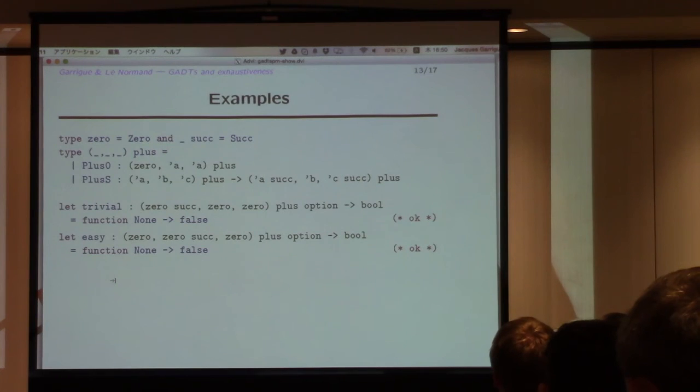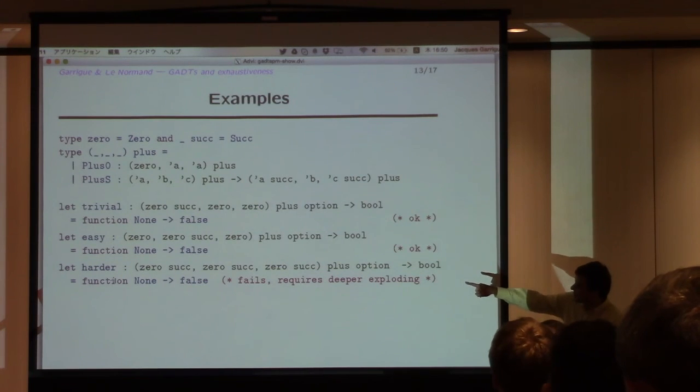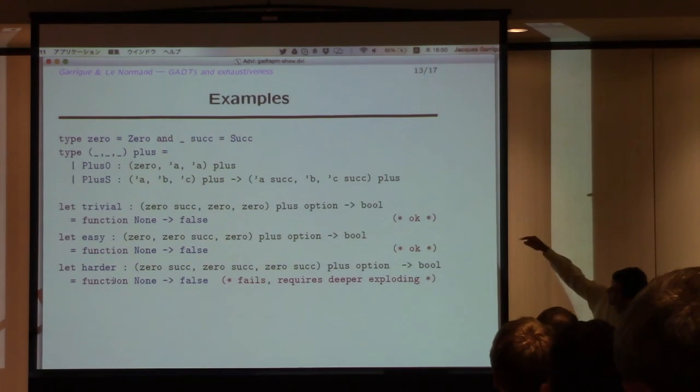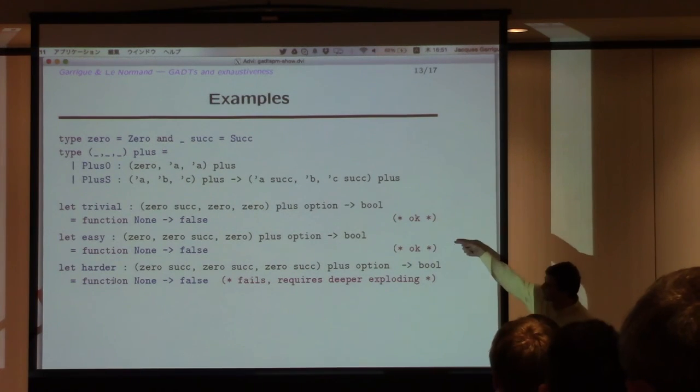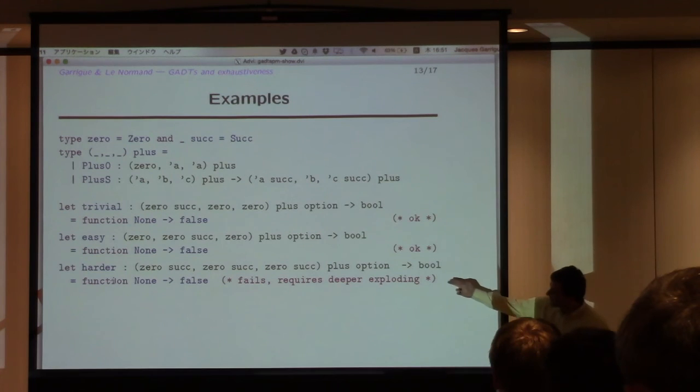And when it gets to this case, you have zero, succ of zero, succ of zero. So what you're doing is, you're going to try the plus_s case. If you try the plus_s case, you go back to the easy case, actually. You get to the easy case, but as I told you, I'm using the heuristic of only exploding once. So actually, we are not going to do the next step. So actually, the check is going to fail here. We are in this terrible case, so it wants to stop somewhere.